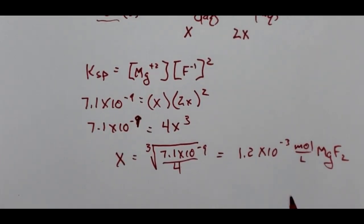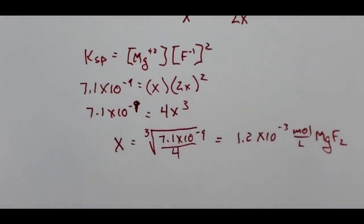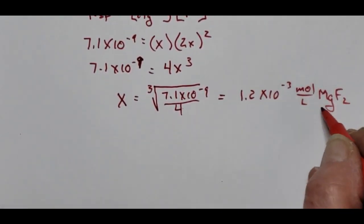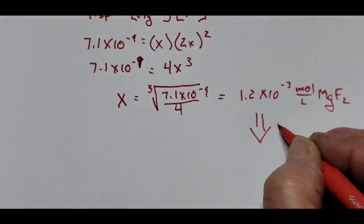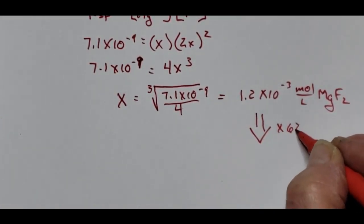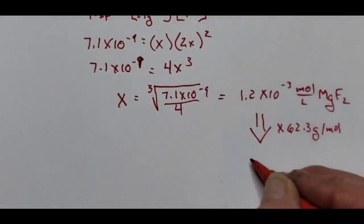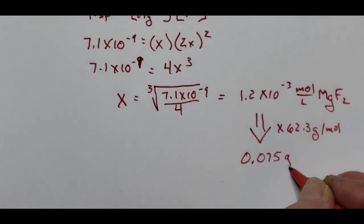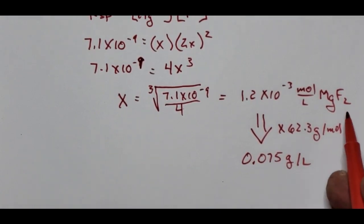But problems four and five on the pre-lab ask for solubility in grams per liter. To do that, multiply by the molecular weight. The molecular weight of magnesium fluoride is 62.3 grams per mole, so 1.2 × 10⁻³ mol/L × 62.3 g/mol = 0.075 grams per liter, which reflects how insoluble magnesium fluoride is — only 75 milligrams dissolve in an entire liter of water.